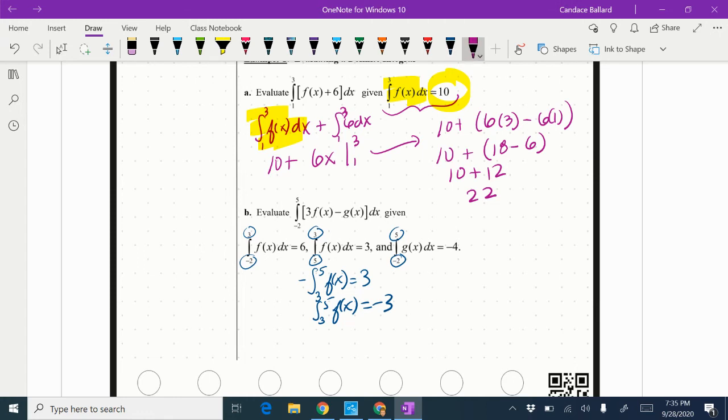So I'm going to break it into negative two to five. I'm going to pull this three out in front, three f(x)dx. Then I'm going to subtract from negative two to five of g(x)dx. Well I definitely know this is equal to negative four. Okay so I can definitely substitute in the negative four for that. So minus negative four.